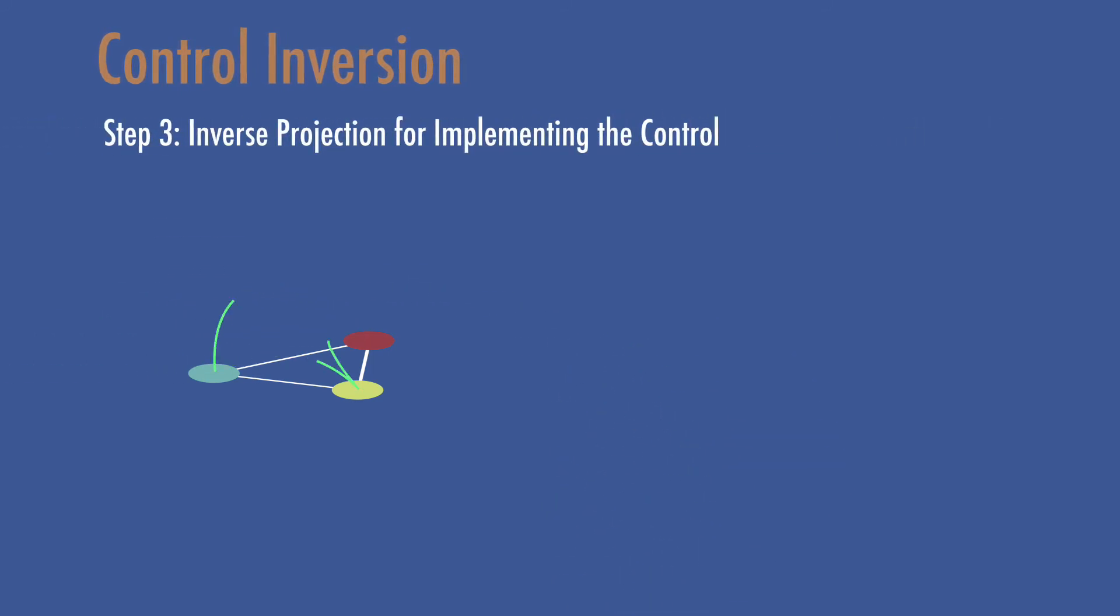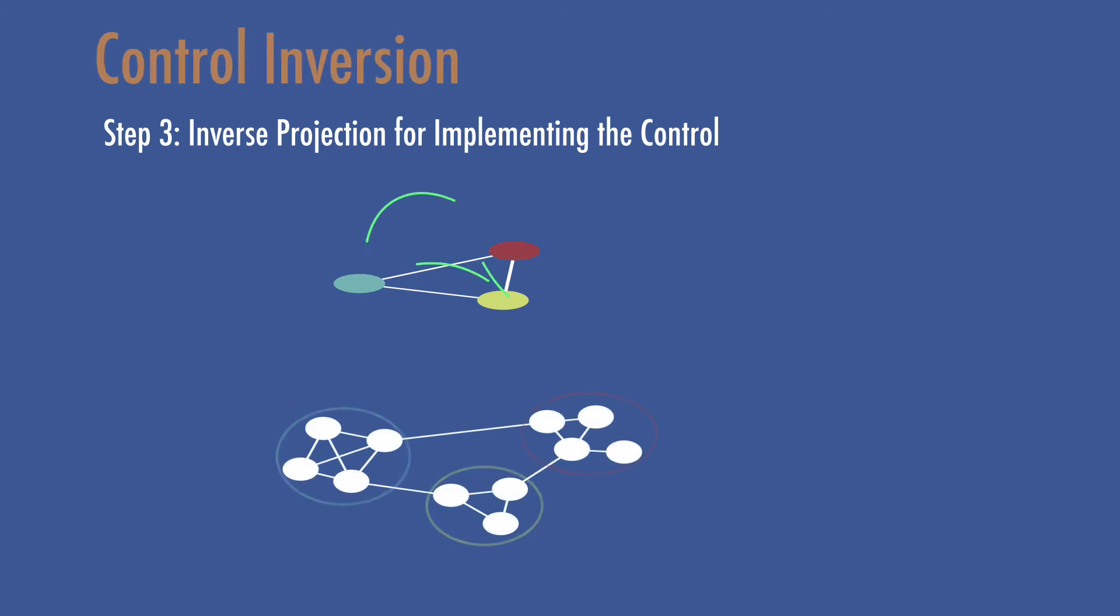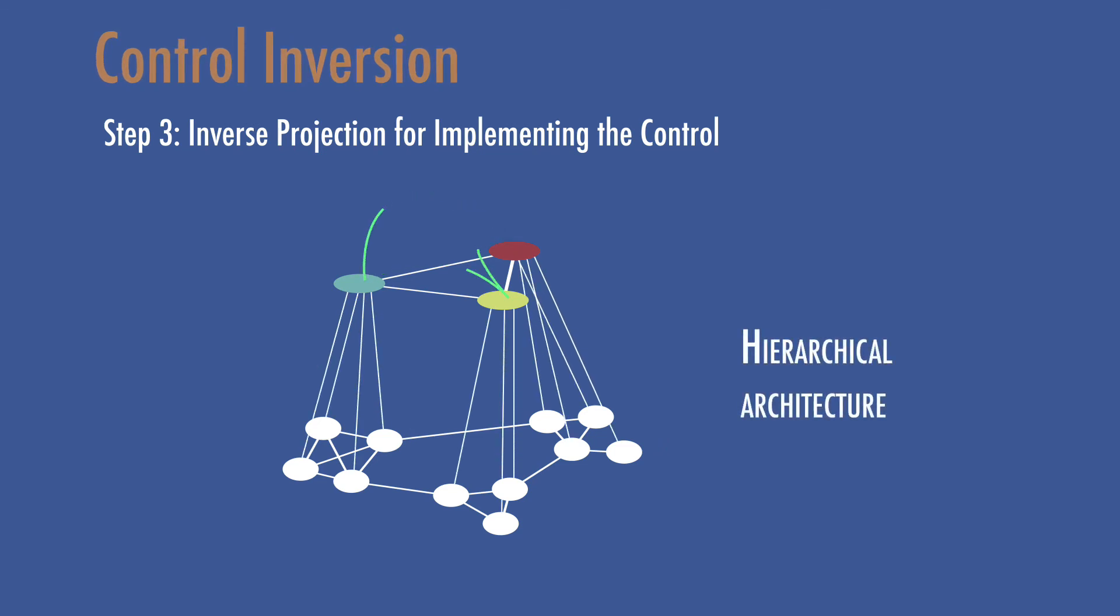Finally, this lower dimensional controller is projected back to the original system for implementation through an inversion projection operator. This inversion can be done using a simple two-layered hierarchical architecture and therefore is also numerically cheap.